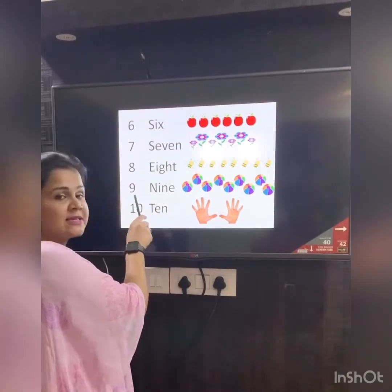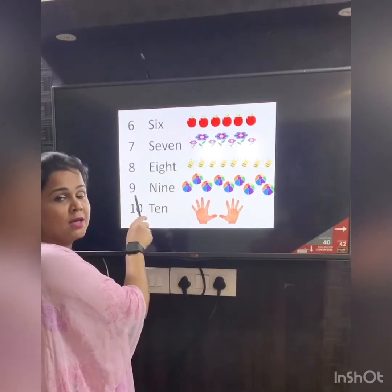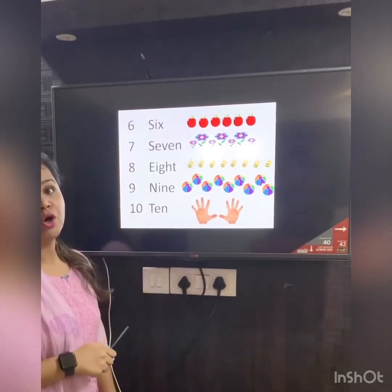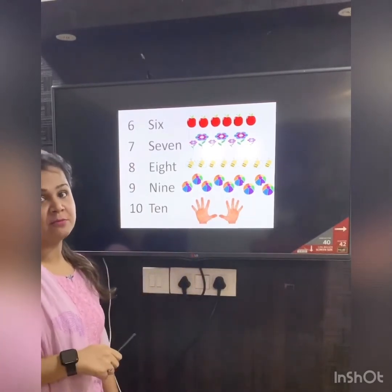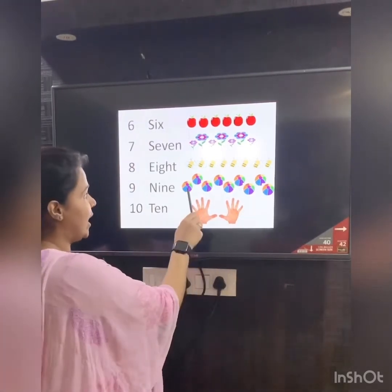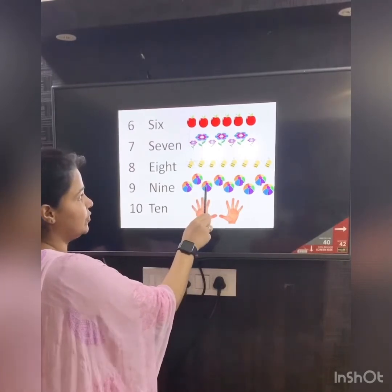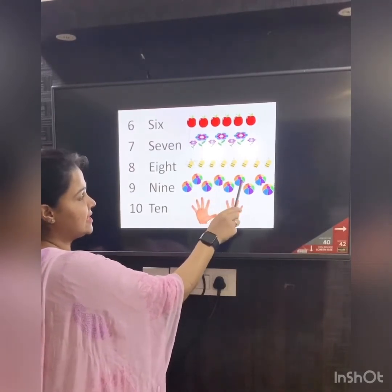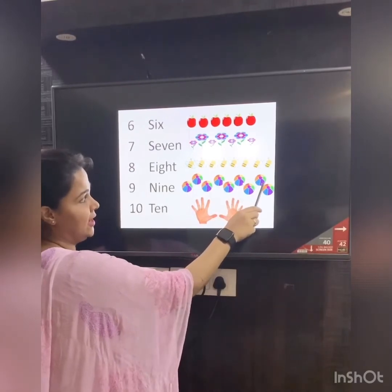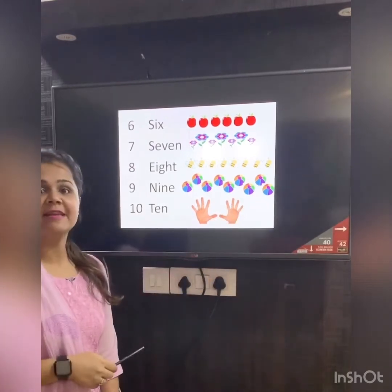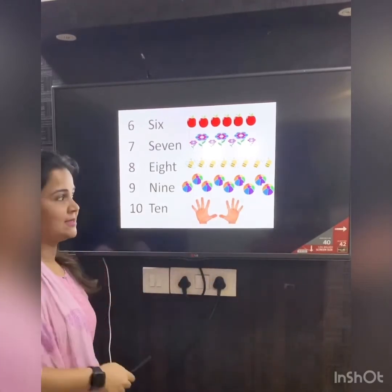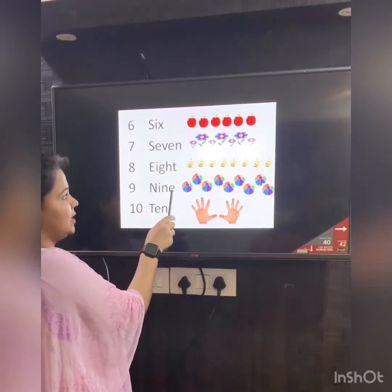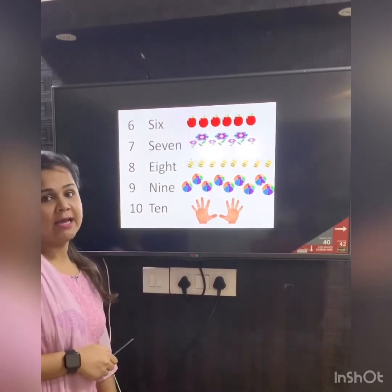The next number here is number 9. Let's count how many balls — and I want you all to repeat after me. Count with me: 1, 2, 3, 4, 5, 6, 7, 8, 9. We have 9 balls. And the number name is N-I-N-E. 9.